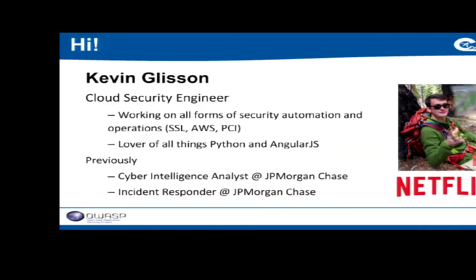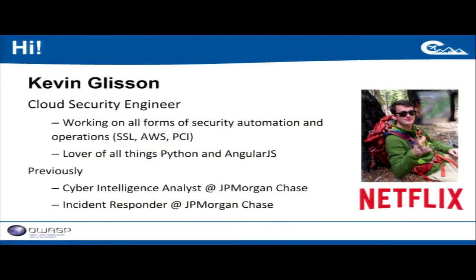At Netflix, I have the opportunity to work on all different kinds of security automation — everything from SSL to our PCI compliance and hacking away at the AWS endpoints. I'm a lover of all things Python and AngularJS, so if you guys have any cool tips or libraries, I'd love to hear about them. Previously, I've worked at JPMorgan Chase, first as an incident responder and then as a cyber-intel analyst.